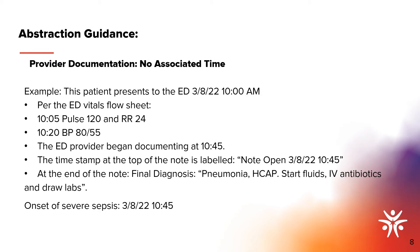In this example, a patient presents to the ED on 3/8/22 at 10 AM. The ED vitals flow sheet shows at 10:05 a pulse of 120 and respiratory rate of 24, and at 10:20 a blood pressure of 80/55. The ED provider began documenting at 10:45; the time stamp at the top of the note reads note open 3/8/22 at 10:45. At the end of the note, the final diagnosis was pneumonia/HCAP with orders for fluids, IV antibiotics, and labs. Because the MD did not enter a time when documenting the final diagnosis, we use the note open time as the infection time. Since the other clinical indicators were met prior to the infection time, the onset is 10:45 — the note open time being the last clinical indicator met.